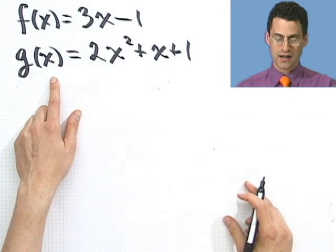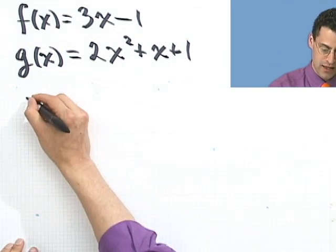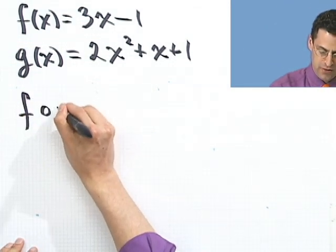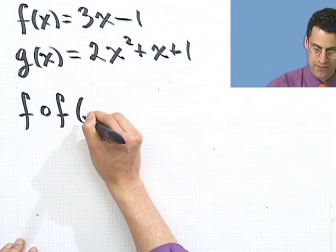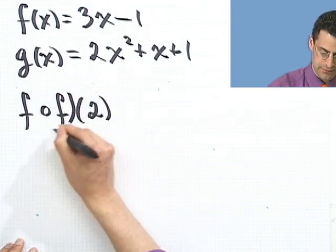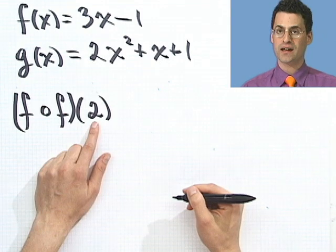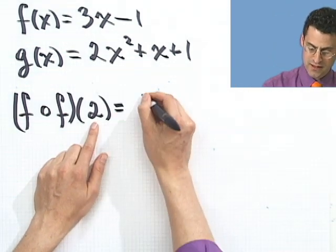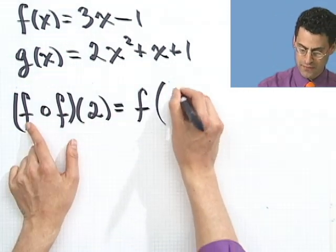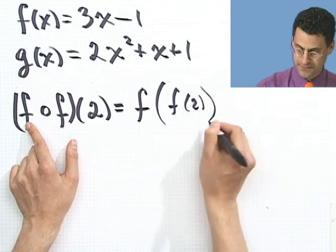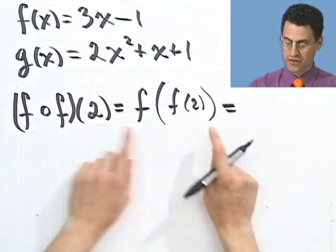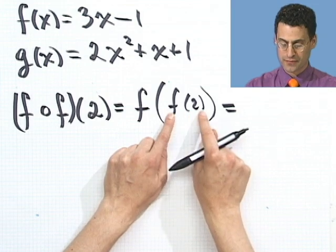And now the question is, what would, for example, be f composed with itself evaluated at 2? How would I do that? Well, what I'd do is I'd first remember what this means. This is f of f of 2. So first I have to compute f of 2. I have to compute this.